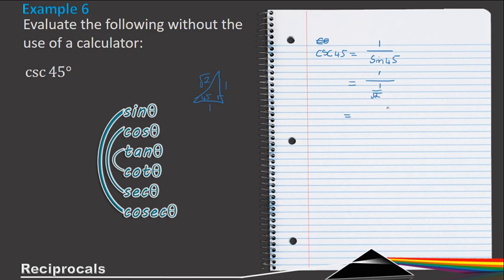So now to simplify, if I have a fraction over a fraction, 1 divided by 1 over √2, and then we flip and multiply. So this is 1 times by the √2 over 1. And this then just becomes √2.